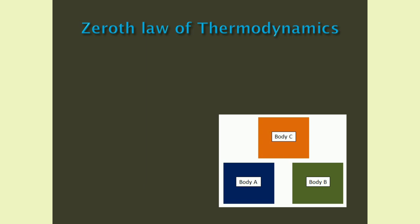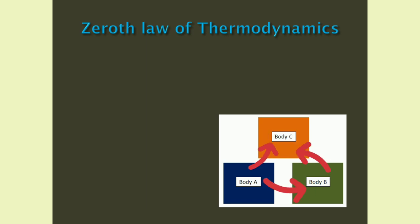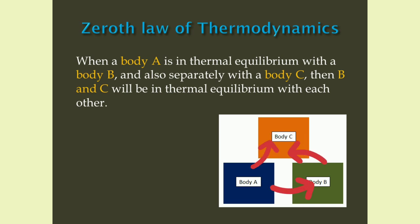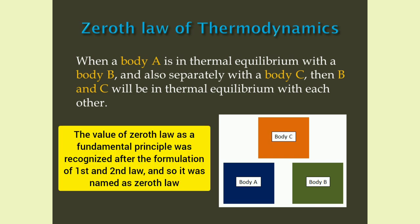Zeroth law of thermodynamics. Consider three bodies — body A, body B and body C, as shown in figure. Let body A be in thermal equilibrium with body B, which means both bodies have the same temperature. And also, body A is in thermal equilibrium with body C separately, which means body A and body C have the same temperature. So we can say body B and body C are also in thermal equilibrium with each other, since they have the same temperature. We can state the zeroth law of thermodynamics as follows: when a body A is in thermal equilibrium with body B, and also separately with a body C, then B and C will be in thermal equilibrium with each other. The value of zeroth law as a fundamental physical principle was recognized after the formulation of first and second law of thermodynamics, and hence it is named as zeroth law.